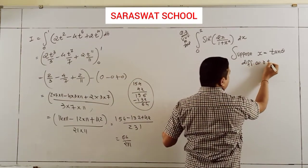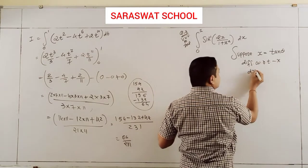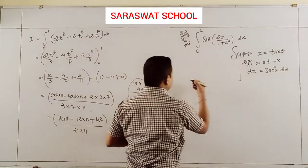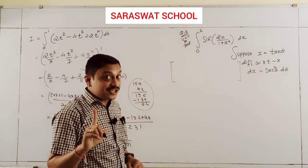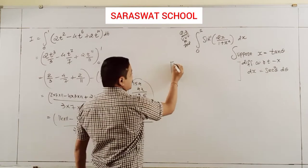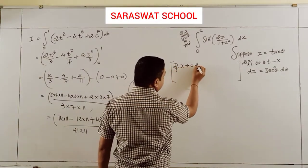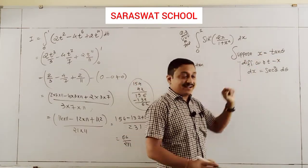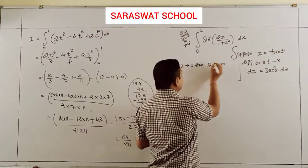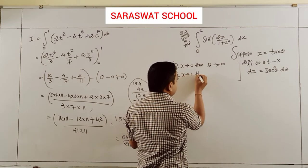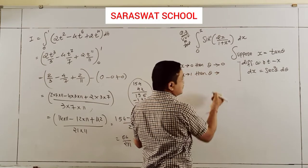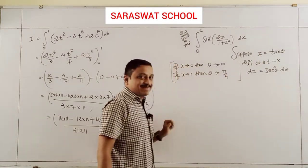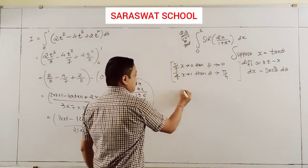Differentiation with respect to x gives dx = sec²θ dθ. Now change the limits: if x tends to 0, then tanθ = 0 so θ = 0. If x tends to 1, then tanθ = 1 so θ = 45° = π/4. So my integration is now from 0 to π/4.